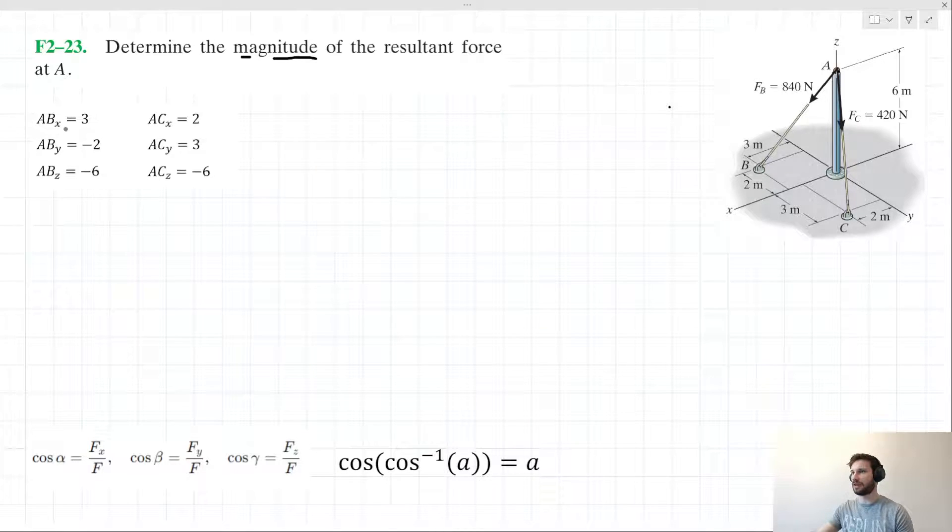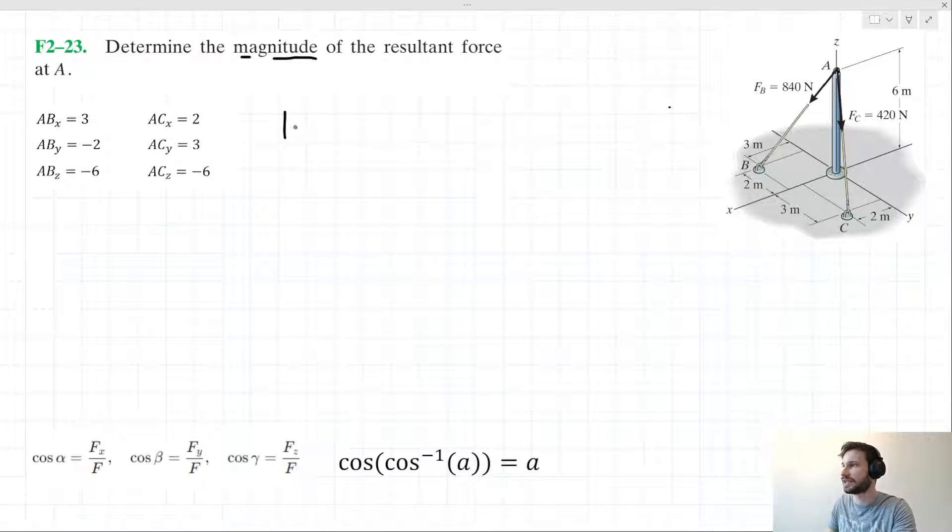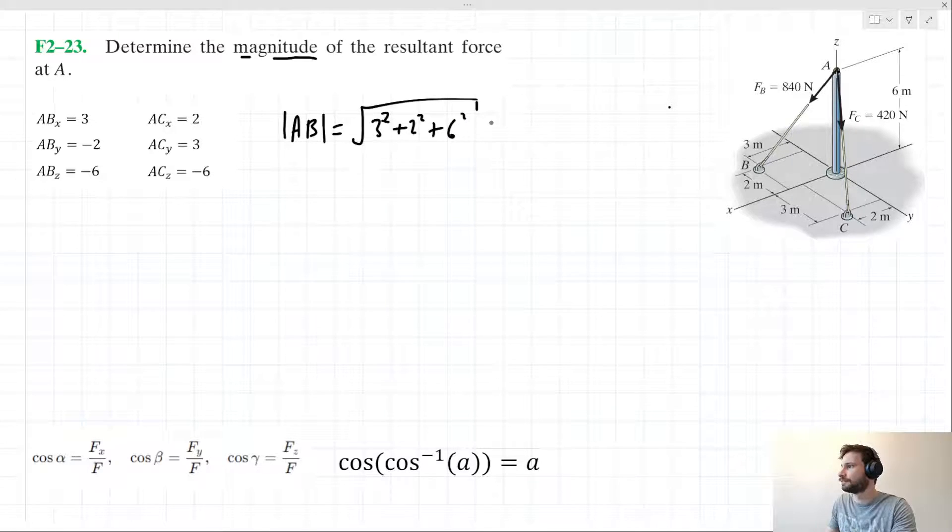To save time, I've determined the X, Y, and Z components of these position vectors AB and AC. Let's solve for their magnitudes. The magnitude of AB equals the square root of 3 squared plus 2 squared plus 6 squared, using Pythagorean theorem, which equals 7. Since the magnitudes of the X, Y, and Z components of AC are the same as those for AB, the magnitude of AC is also 7.